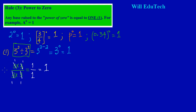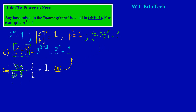We have one upon one, which equals one. Using both methods we get the same answer: one. This confirms that a base raised to the power of zero equals one.